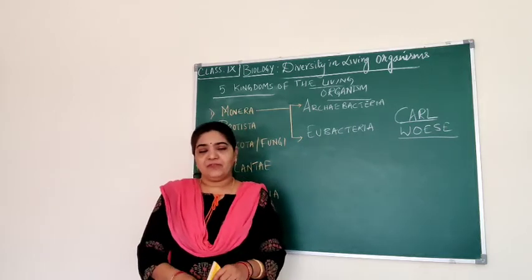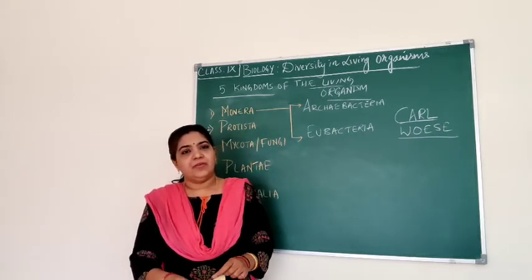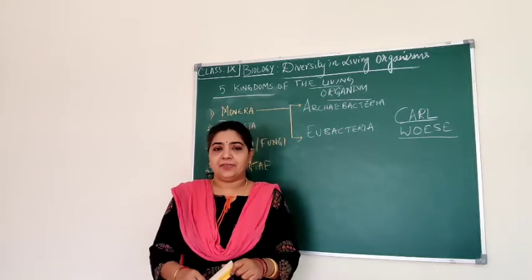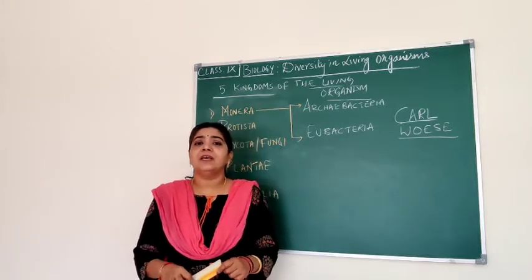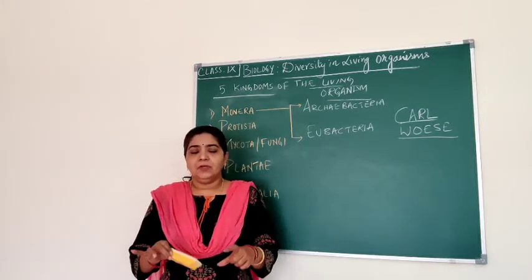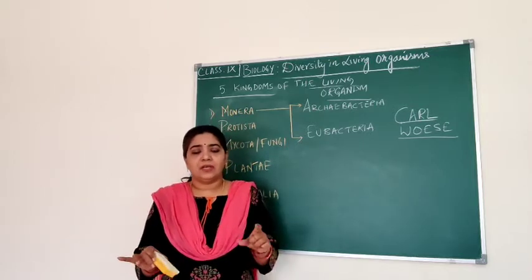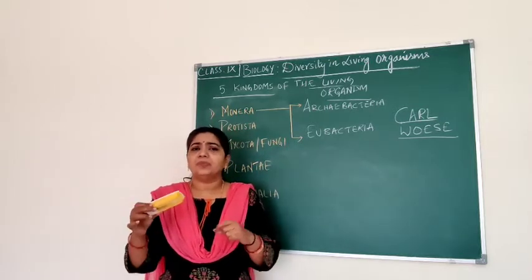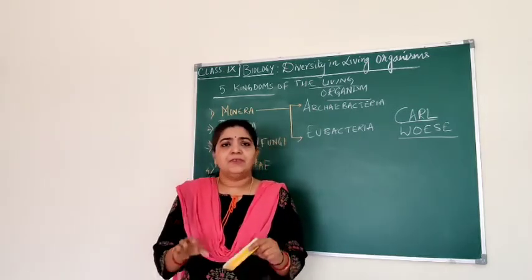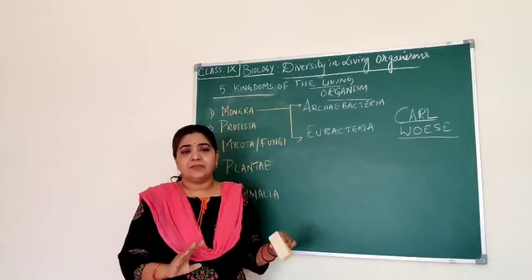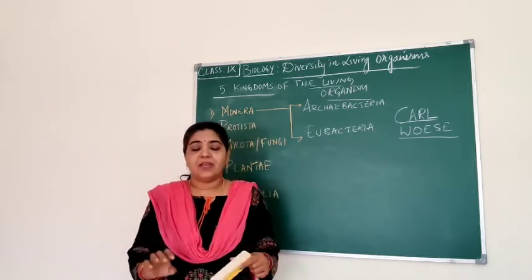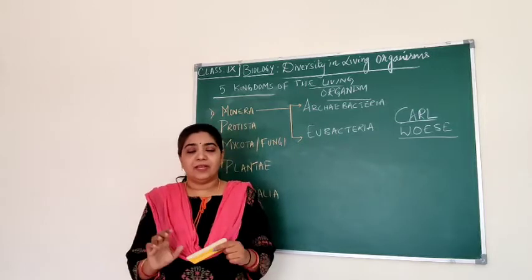In the previous video, we learnt about the five kingdoms of classification. Any living organism should be occupying one of these five kingdoms. If it is not present in any of these five kingdoms, then it is not a living thing.